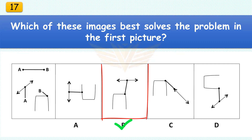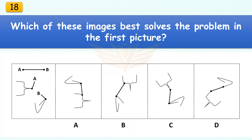Which of these images best solves the problem in the first picture? The correct answer is B. Leave the U as is, but rotate the double headed arrow 45 degrees.